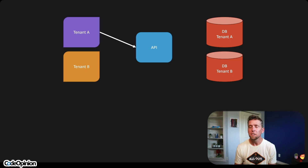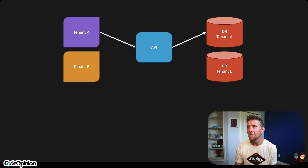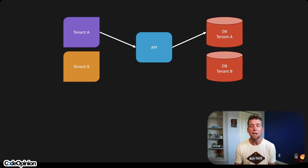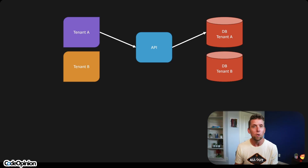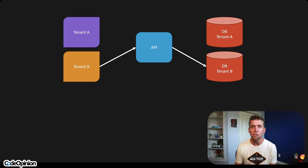With a database per tenant, tenant A hits our API, and because we know its identity and what tenant it is, we can make a connection to the specific database for that tenant. We're not sharing any information or schema, so we don't have to worry about leaking any information or doing query filtering. Same thing — when tenant B makes a request, we connect to its specific database.